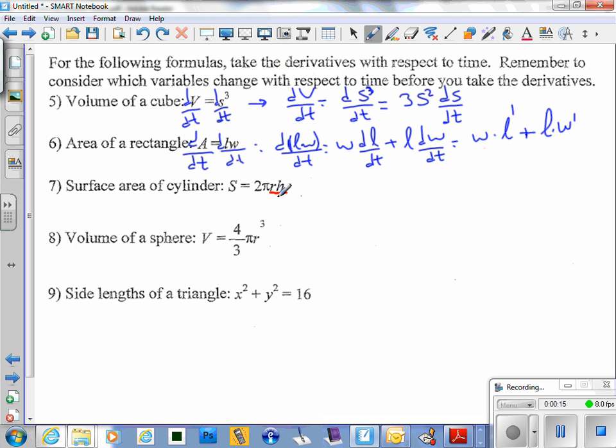You can use the similar product rule. You keep this 2π in front everywhere, as 2π is a constant number.